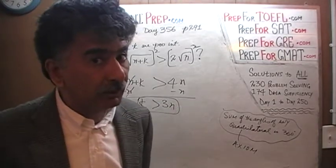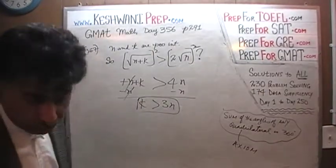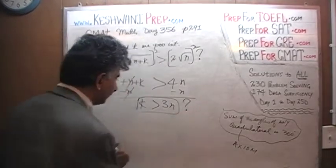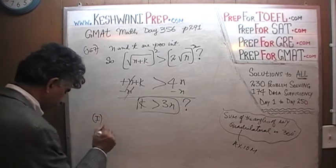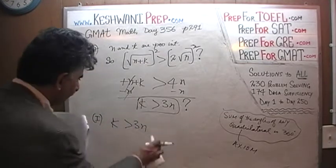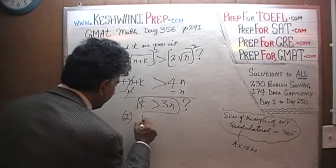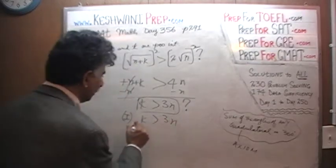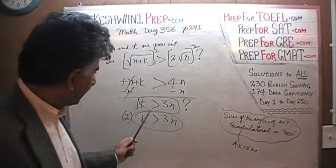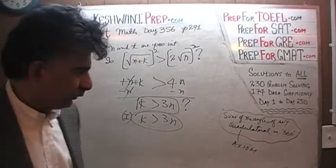Now we are ready. Let's see what the first statement tells us. In the first statement, they tell us that k is greater than 3n. Can you tell whether k is more than 3n if you are being told that k is more than 3n? Of course — the first statement by itself is enough.